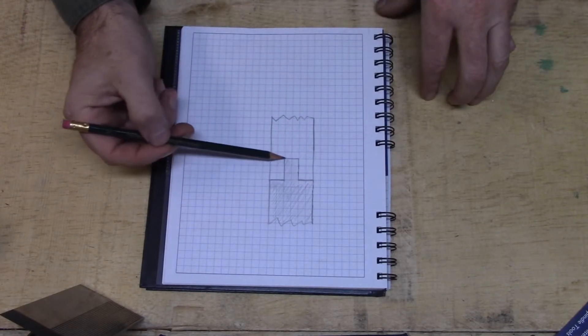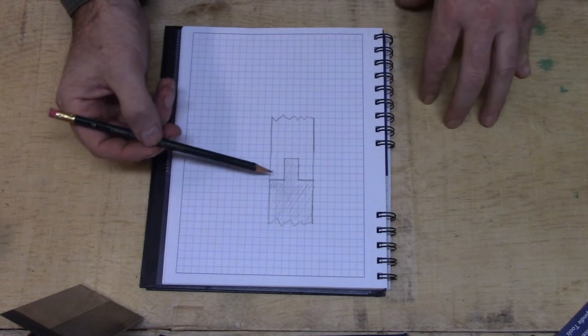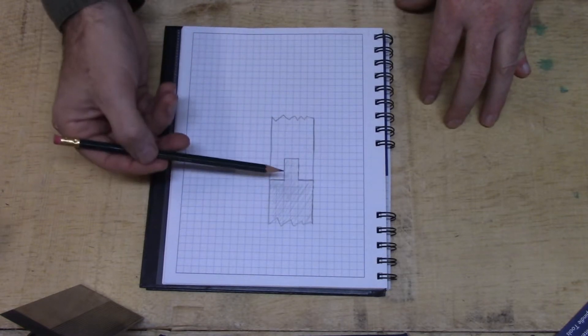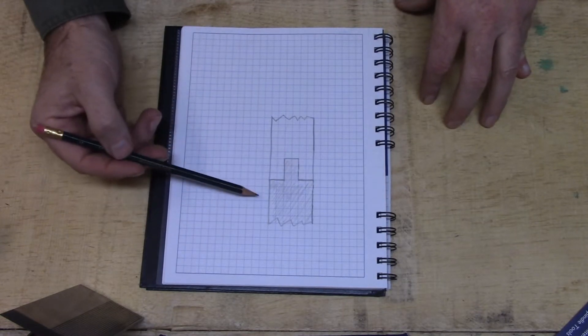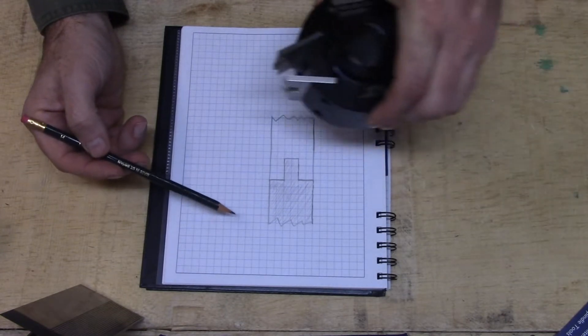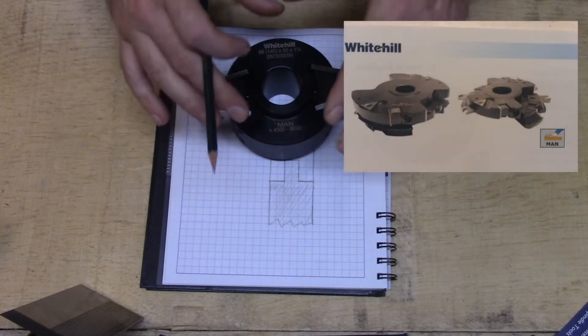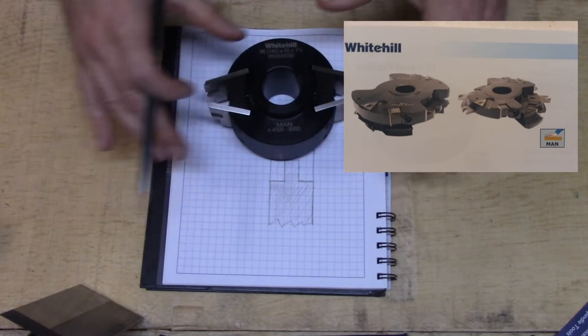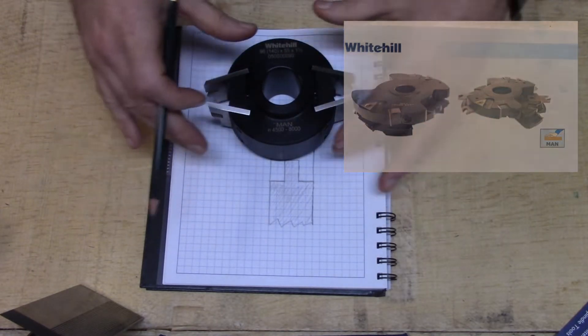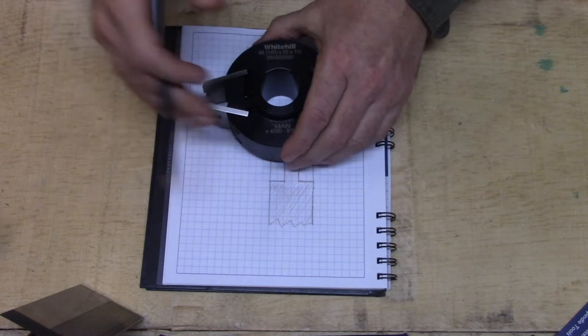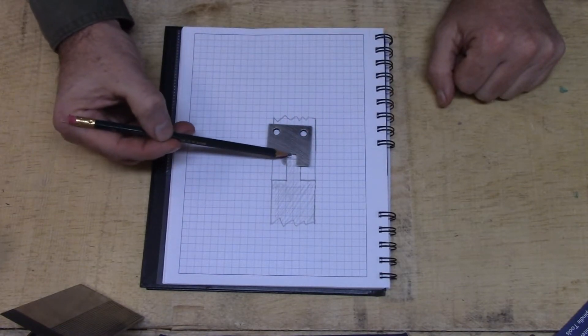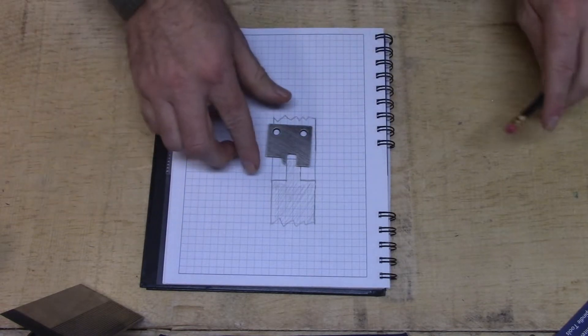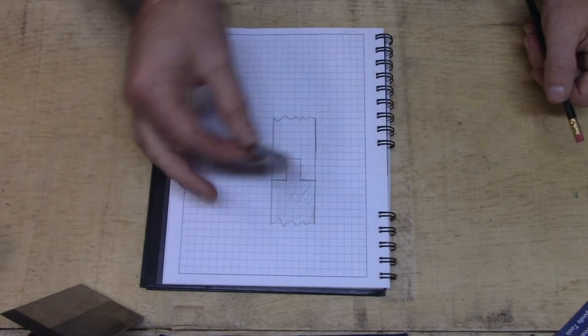I suppose it's debatable whether or not the male half of a cope and stick joint is in fact a tenon. A lot of folks would call it a stub tenon, but there's enough conceptual and tooling overlap in the execution of the joint that I wanted to talk about it quickly. I don't do very much in the way of cope and stick, but before I had some of the other tooling options I used to get high speed steel knives ground for a limiter head such as this. You can see on this coping or scribing knife that there is a small kind of kitchen or cabinet door grade tenon there.